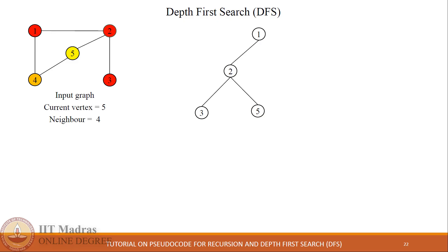We check the neighbors of vertex 5. Vertex 5 has only one unvisited neighbor, which is 4, so we add vertex 4 next to 5. At this point all nodes of the graph are visited, so we stop the execution of the depth-first search algorithm.